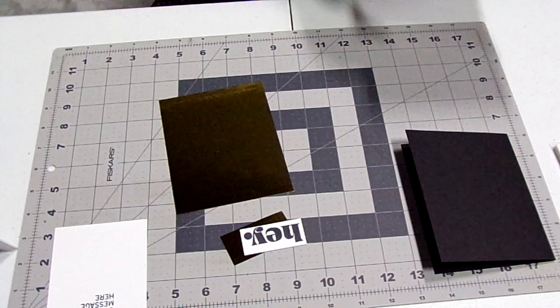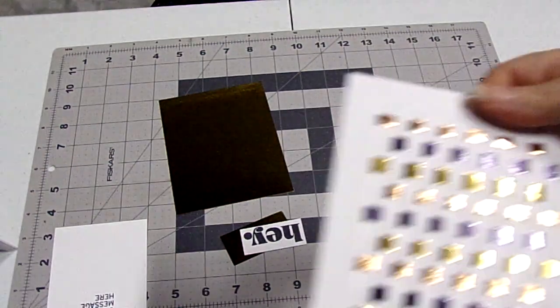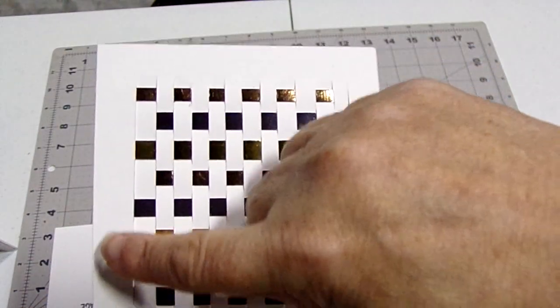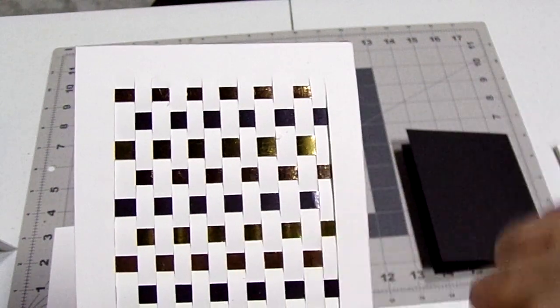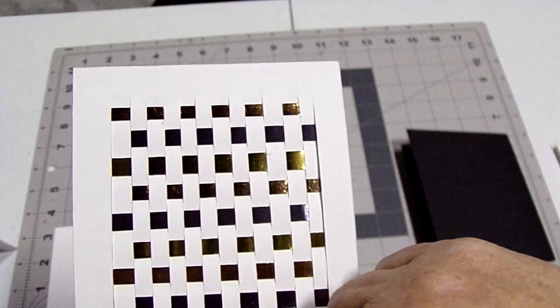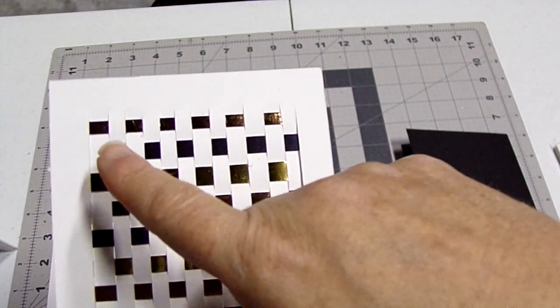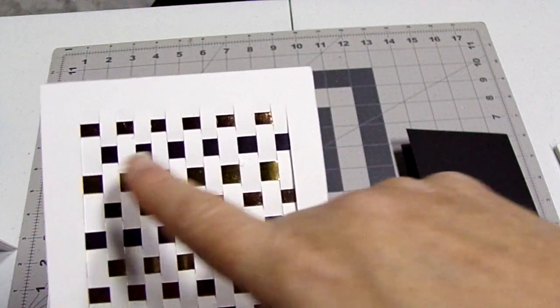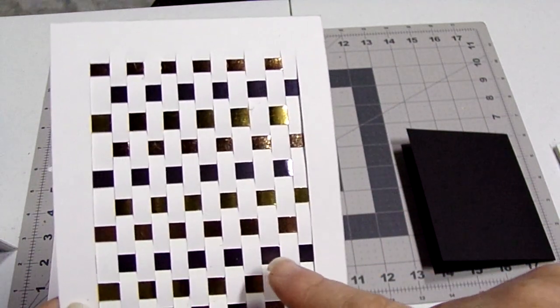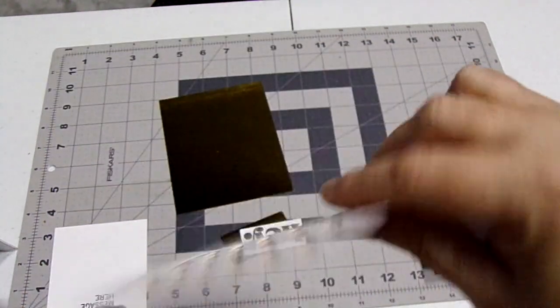So this is the focal point of the card. What I did is I made a half inch border and I sliced every quarter inch vertically down this way of the white cardstock. Then of the metallic cardstock I sliced quarter inch strips and I wove them in between here.